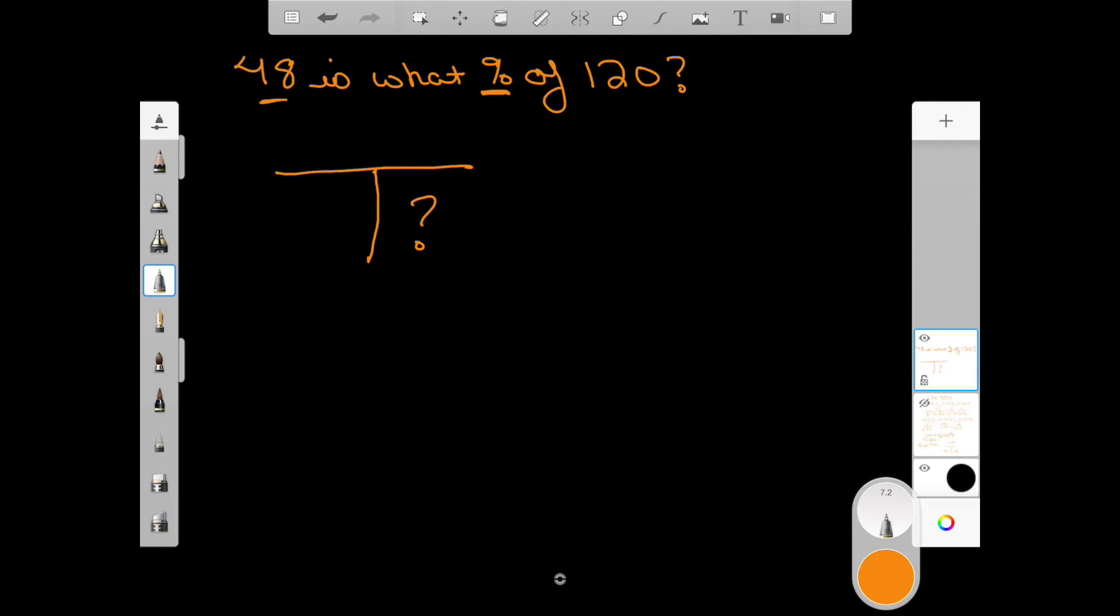In this case, 48 is our part, so stick it up there, and the 120 is what we started with. Notice the 'is' right here, a lot of times 'is' goes up here, and the 'of' right there a lot of times goes right there. So we've got a top and bottom. Now I've told you before if you've got a top and bottom you're going to divide.